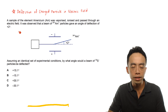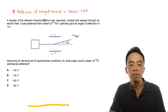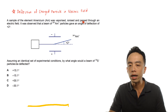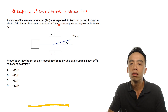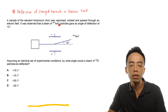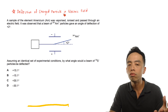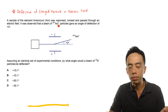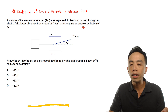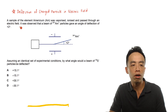The question goes something like this. A sample of the element americium was vaporized, ionized, and passed through an electric field. The observation was that a beam of Am+, with a mass of 241 (the nucleon number), gave an angle of deflection of plus 2 degrees.